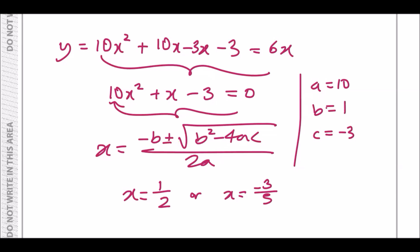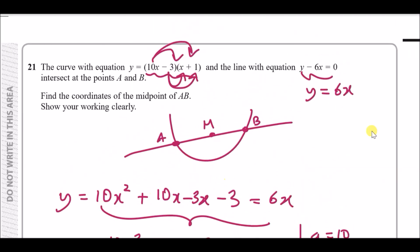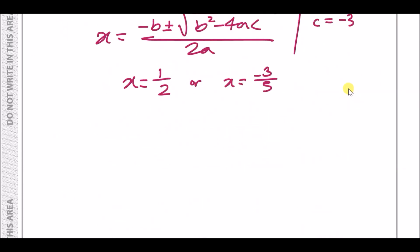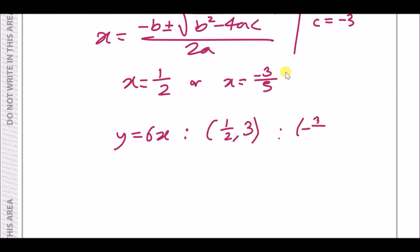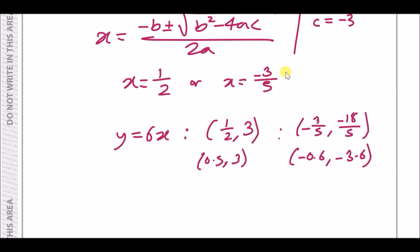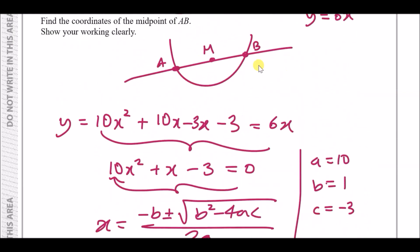Those are the x-coordinates. Since y equals 6x, when x equals one half, y equals 3. For the second point, when x equals minus three over five, y equals minus 18 over five, which in decimal form is minus 3.6. So in decimals the two points are (0.5, 3) and (−0.6, −3.6).